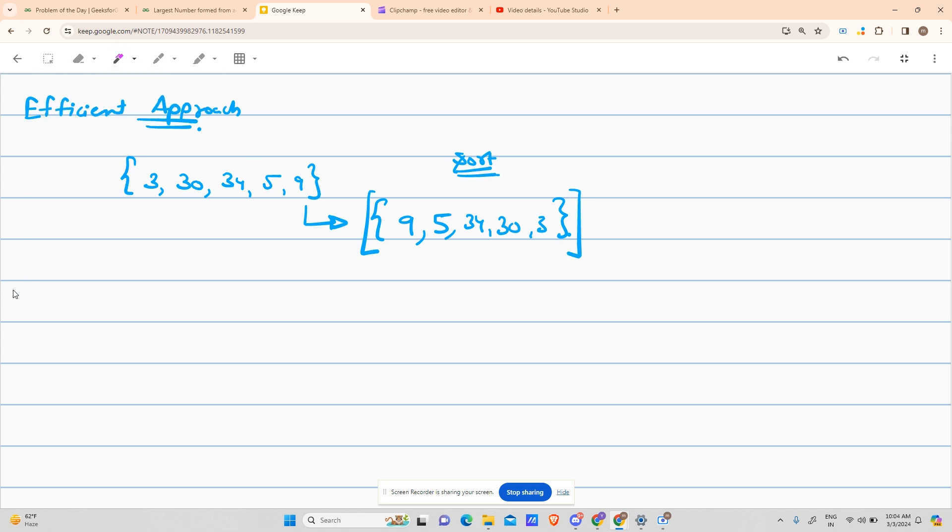I came to this answer by just one thing: whenever I have to make a number greater, suppose the number is A, B, C, D, E, F, G. To increase it, should you increase G or should you increase A? The answer is you should increase A. So I will sort them in a manner that 9, which is the greatest present in the whole string in terms of the first digit, comes first. If we compare the first digit of every number—3, 3, 3, 5, 9—9 is maximum. After that, 5 is maximum. After that, all are the same, so I will check the next digit. It is 0, 4, so 34 is maximum. After that, 30 is maximum, then 3.